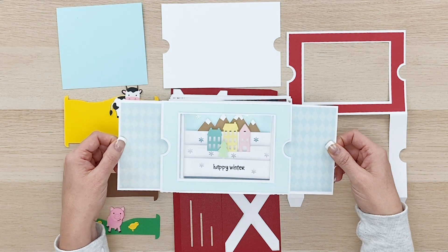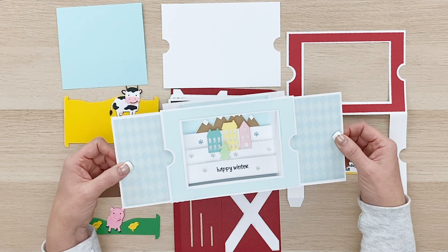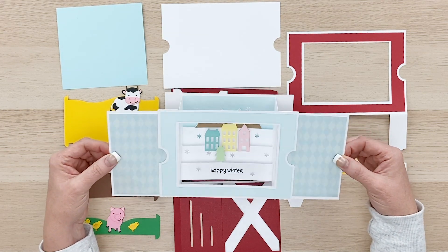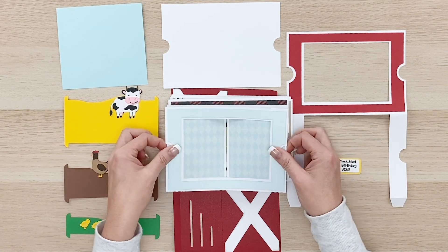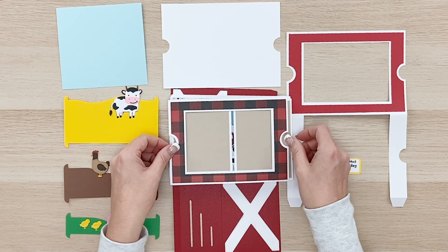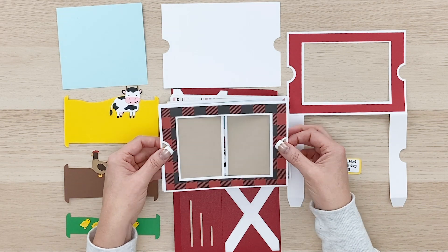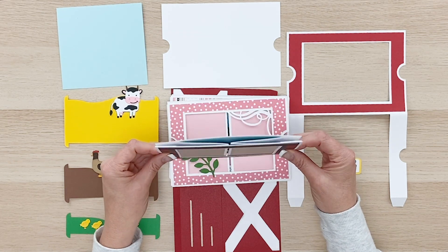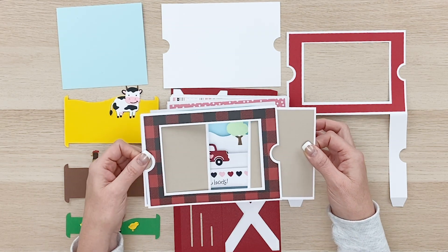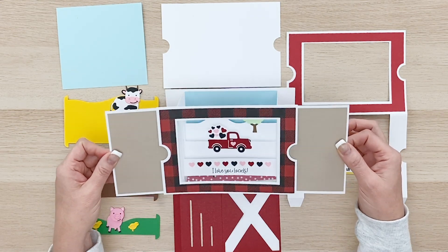This one is Happy Winter. Cute little house scene and a tree and the mountains. Aren't these so cool? I just love these. So they're five by seven when they're flat and they fit into a five by seven envelope and then when you open them up, they expand to be this really cool scene.